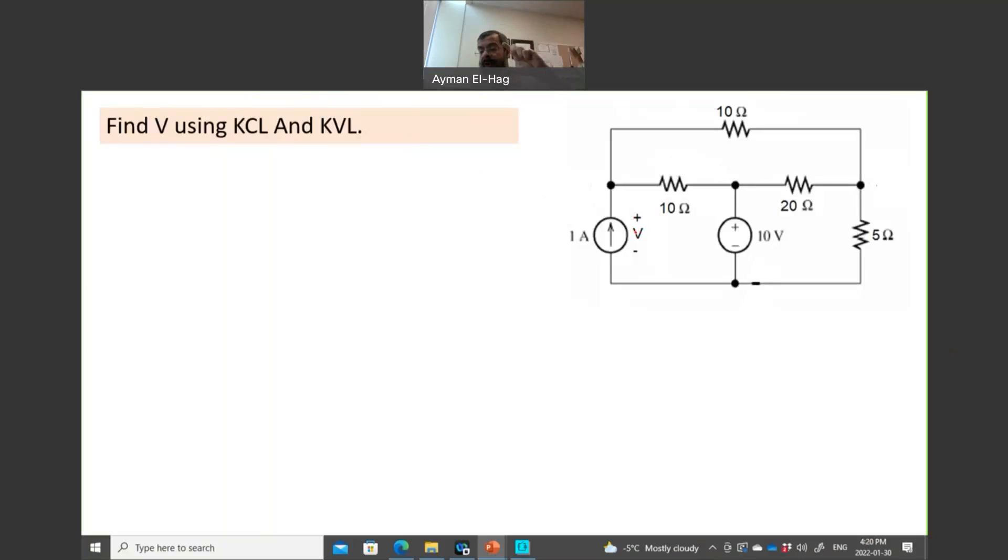The question says find V, which is the voltage across the current source, using KCL and KVL. Rule number one: assign current in each branch that has a resistance. So we'll have here I1, I2, I3, and then finally I4. Second, assign polarity using the passive convention, so this is plus minus, plus minus, plus minus, plus and minus. Of course, before that, we cannot simplify the circuit.